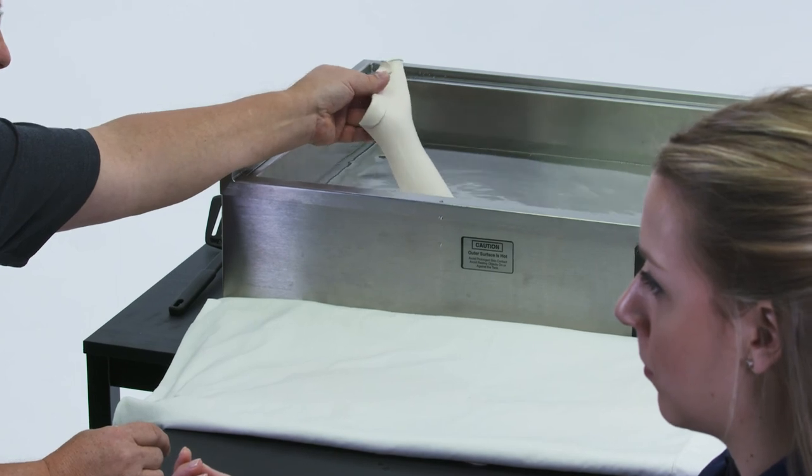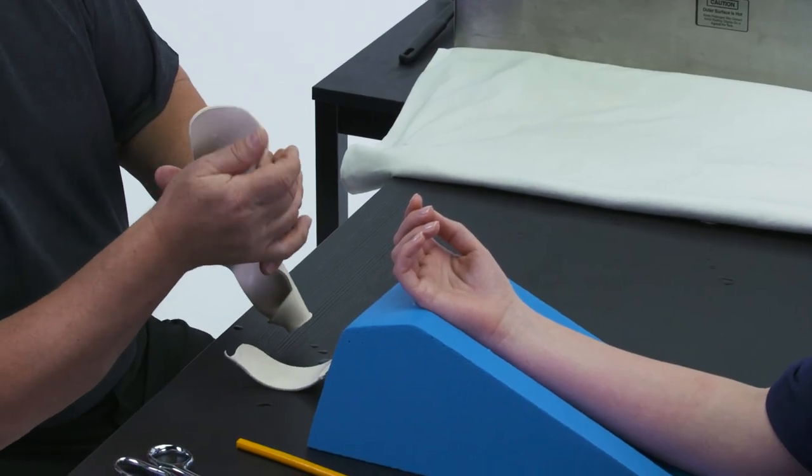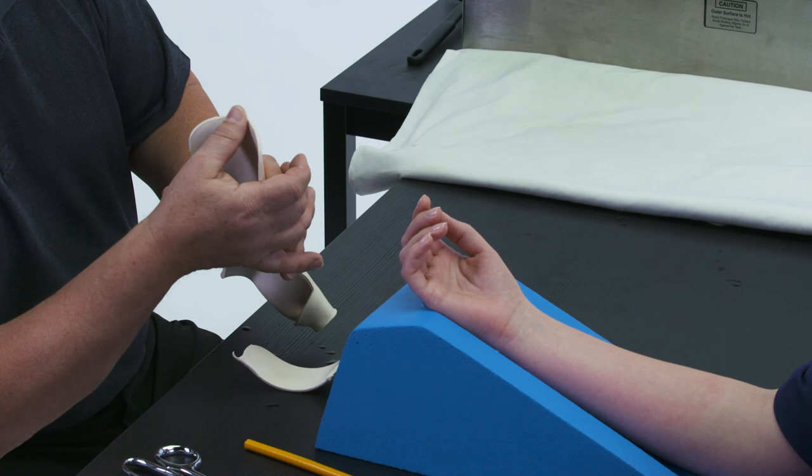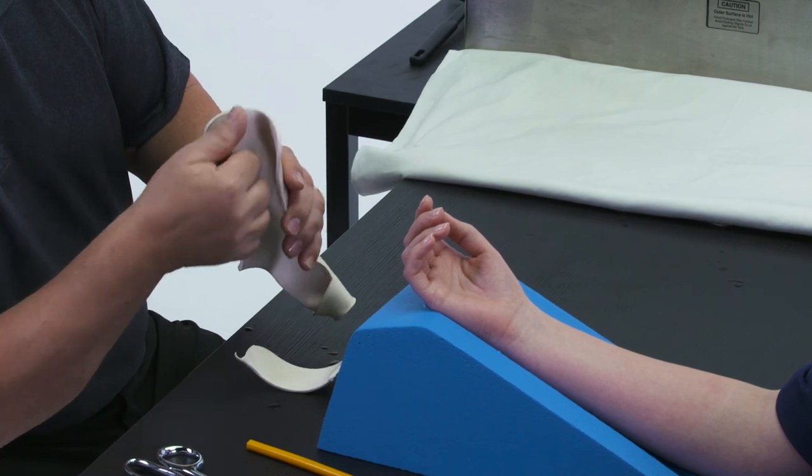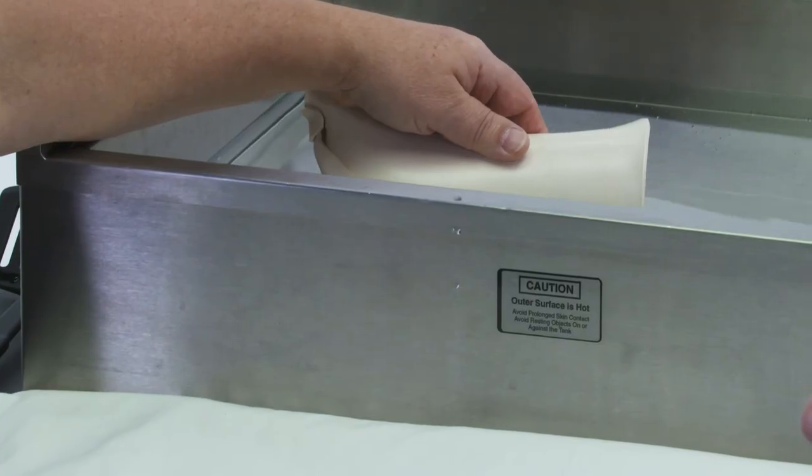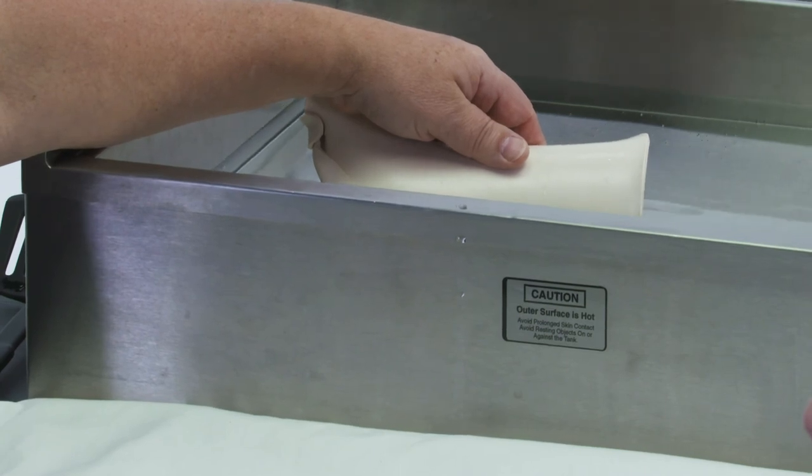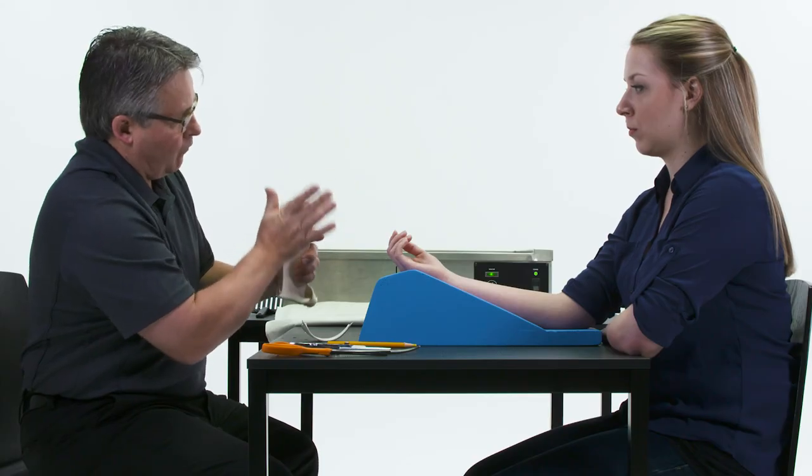Gently flare the proximal border of the splint. The flare does not need to be dramatic. The intent is to lift the proximal border off the forearm, reducing pressure. Dip remaining edges into the splint pan for 20-30 seconds and finish the edges with your palm.